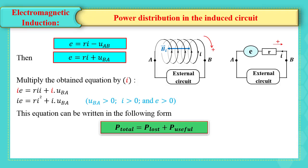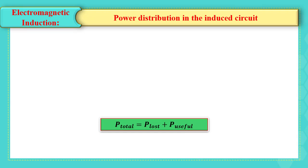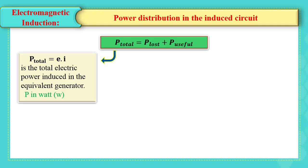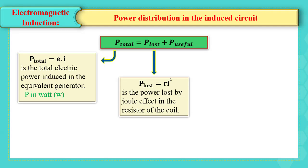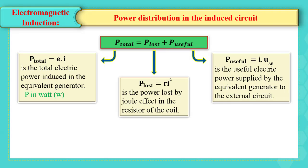This equation can be written in the following form: P total equals P lost plus P useful, where P total equals EI is the total electric power induced in the equivalent generator, and the unit of P in SI units is Watt. P lost equals Ri squared is the power lost by Joule effect in the resistor of the coil, and P useful represents the useful electric power supplied by the equivalent generator to the external circuit.